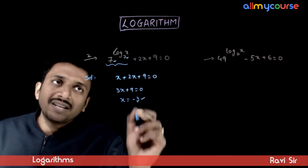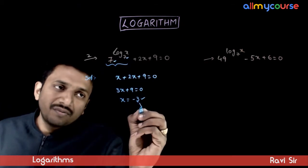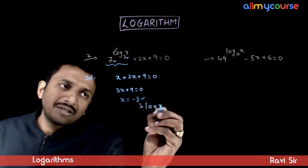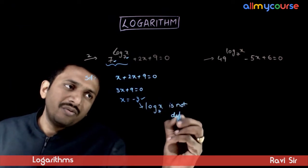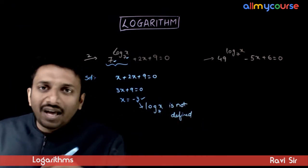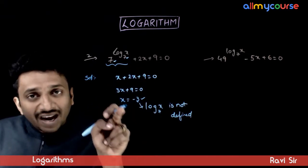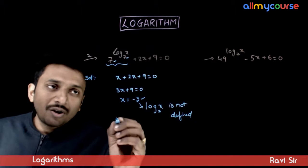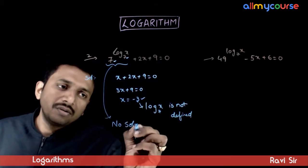For this equation to get satisfied, x has to be equal to minus 3. But if x is equal to minus 3, log x to the base 7 is not defined. For this value, log x to the base 7 is not defined. Hence, if the answer has to be there, it has to be minus 3. But at this minus 3, the logarithm is not defined. Hence, the equation has no solution.